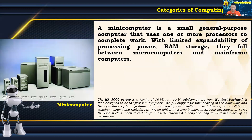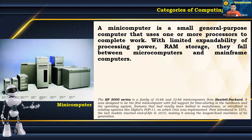A minicomputer is a small general-purpose computer that uses one or more processors to complete work. With limited expandability of processing power and RAM storage, they fall between microcomputers and mainframe computers. The HP 3000 series is a family of 16-bit and 32-bit minicomputers from Hewlett-Packard, designed to be the first minicomputer with full support for timesharing. First introduced in 1972, the last models reached end-of-life in 2010, making it among the longest-lived machines of its generation.